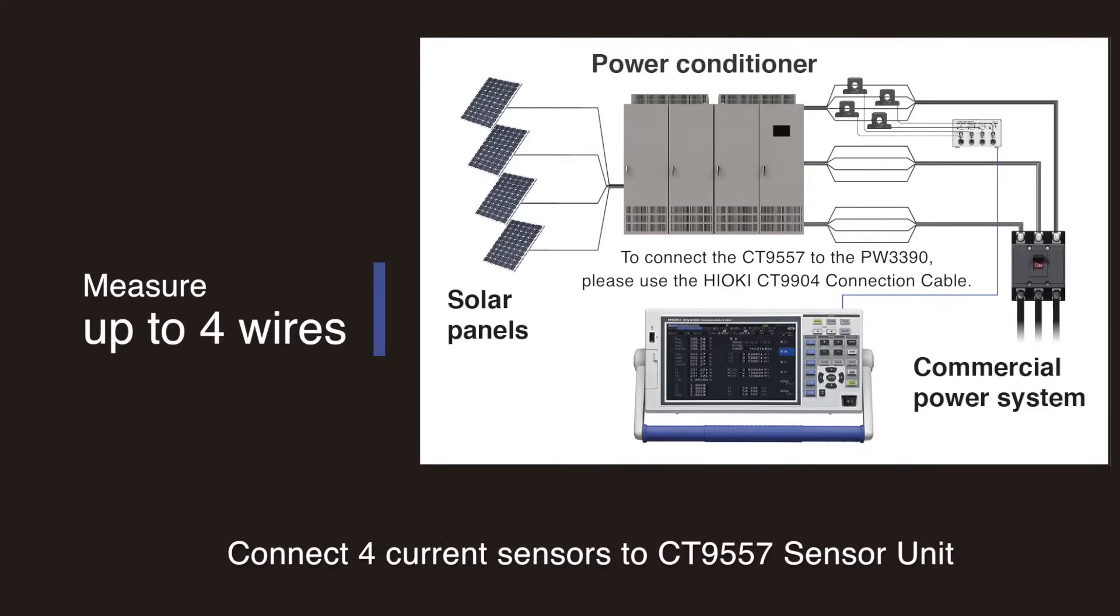Simply connect the four current sensors to the power analyzer through the CT9557 sensor unit. The unit will aggregate the waveforms to output to the PW3390.